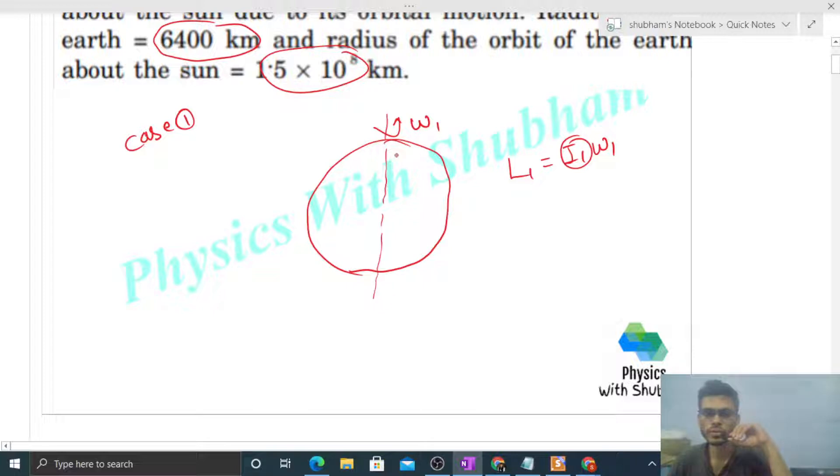Now what is the moment of inertia of a solid sphere? This Earth is also a solid sphere, right? So moment of inertia of a solid sphere about an axis passing through its center is 2 by 5 of M into R square. So let's write it: Me is the mass of the Earth and Re is the radius of the Earth, something like this.